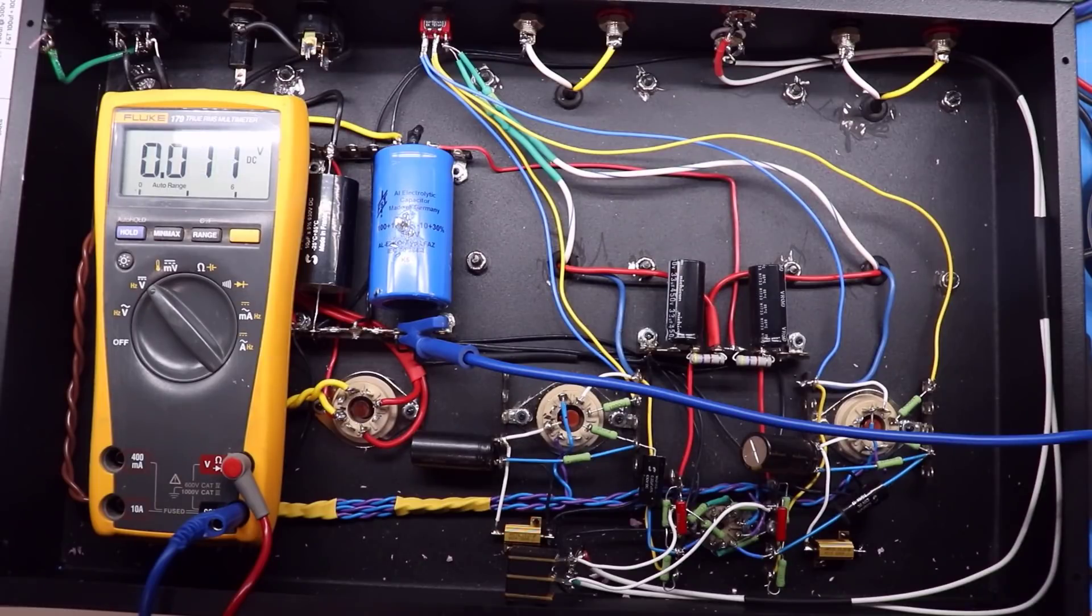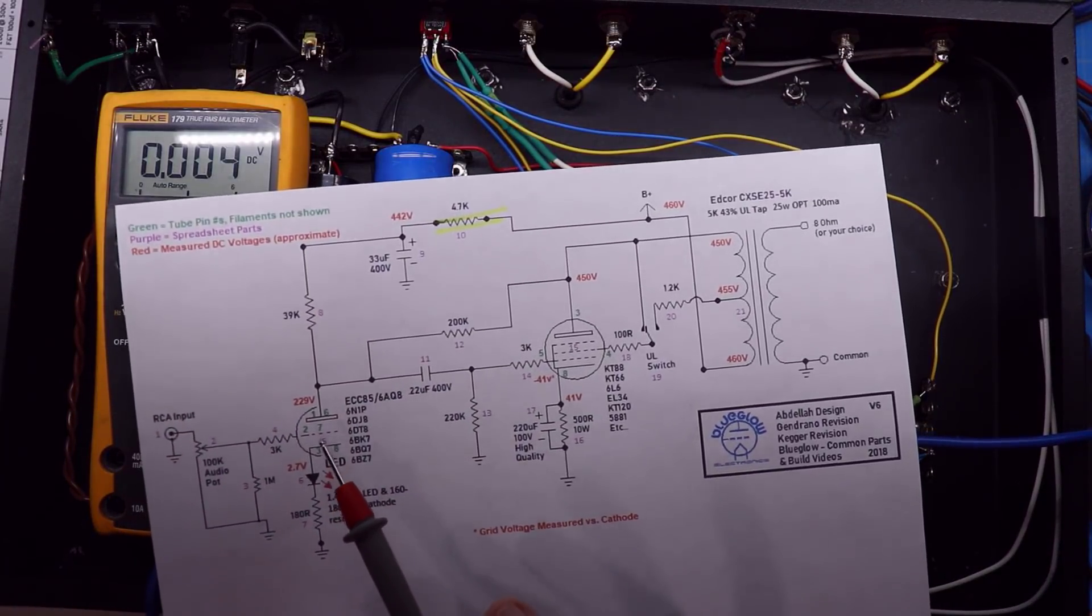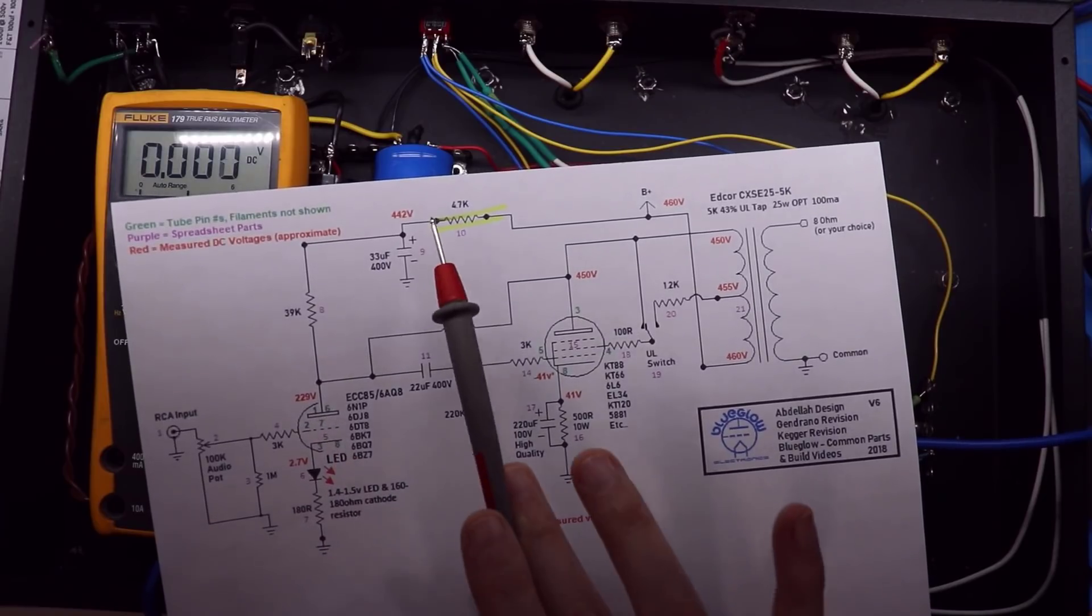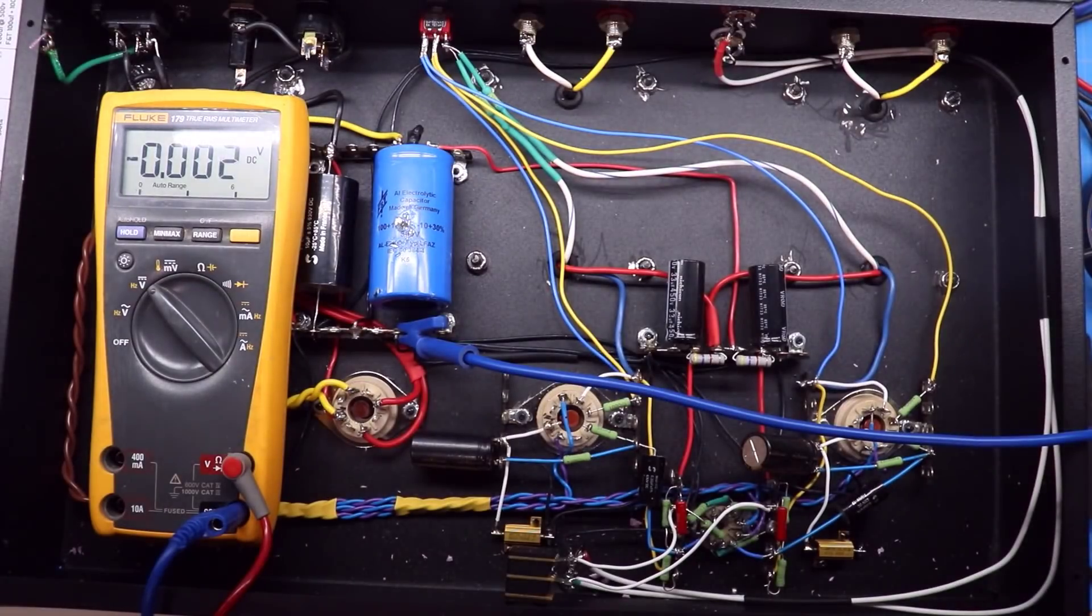And even if I wouldn't have had a schematic, it would have been simple enough to go online and look up 6N1P and typical plate voltage for one of those. And I would have known it's not 400 and some volts, it's 200 ish kind of 200, 250 kind of volts. I would have known something was out of whack here with nothing more than this meter.